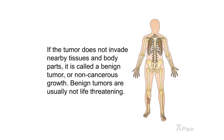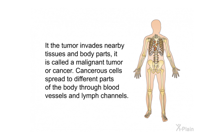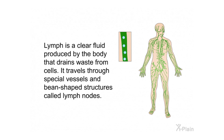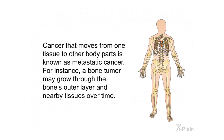If a tumor does not invade nearby tissues and body parts, it is called a benign tumor or non-cancerous growth, and is usually not life-threatening. If the tumor invades nearby tissues and body parts, it is called a malignant tumor or cancer. Cancerous cells spread to different parts of the body through blood vessels and lymph channels. Cancer that moves from one tissue to other body parts is known as metastatic cancer.